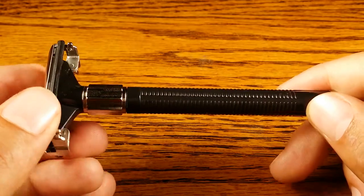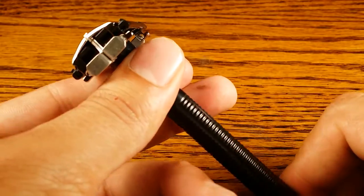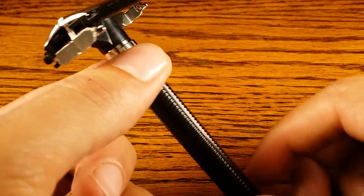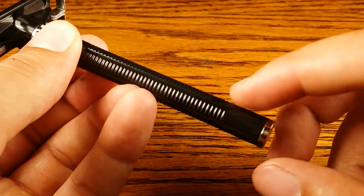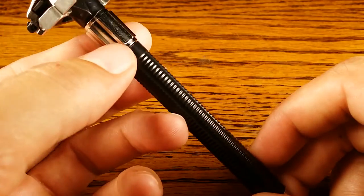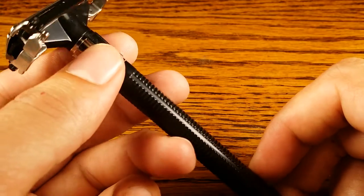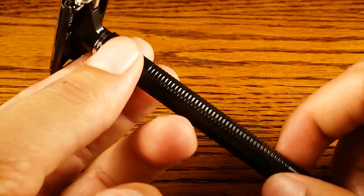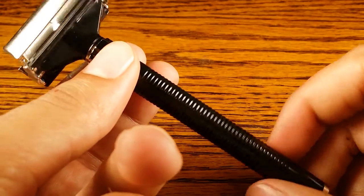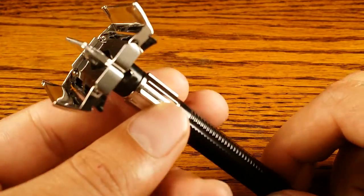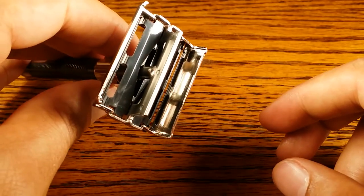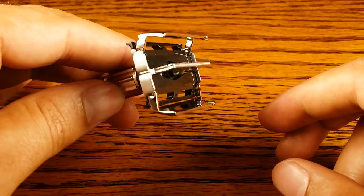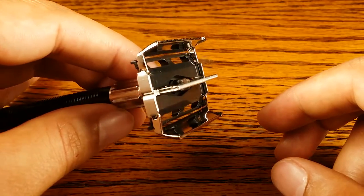In terms of blade replacement, it is a butterfly open safety razor. Unlike most, some have knobs at the bottom like a lot of Merkurs or the ones that have knobs up top where you just twist the knobs, but this one you actually twist the handle and the whole head moves with it and it opens up just like that. So it's very easy to replace the blade.